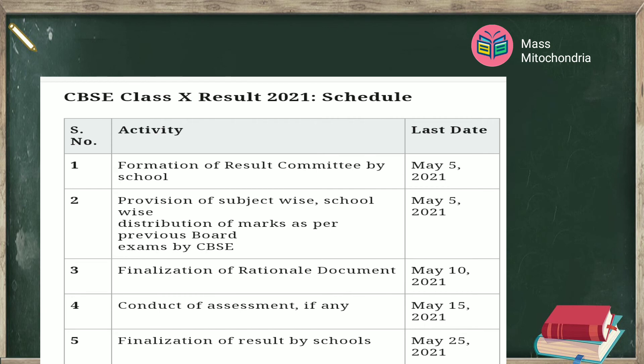Schedule given by CBSE: Formation of result committee by school — May 5th. Provision of subject-wise and school-wise distribution of marks as per previous board exams by CBSE — May 5th. Finalization of rational document — May 10th. Conduct of assessment, if any — May 15th. Finalization of result by the school — May 25th.